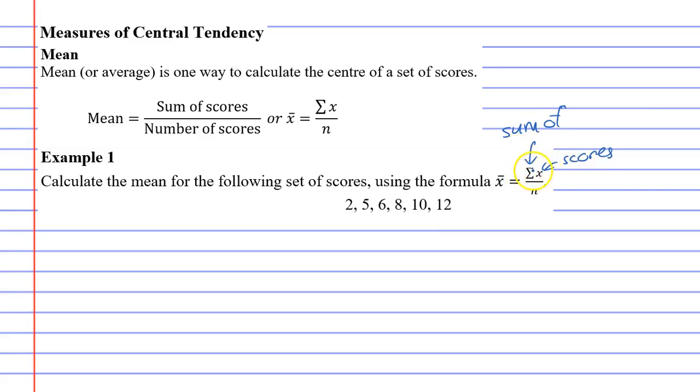So essentially this top line is saying, what is the sum of the scores? And if I was finding sigma x, I would just simply add all these scores up. I would find the sum of them, which is what we do. We add the scores up. So what do I get when I add these up? I'm just going to double check. 12 plus 10 plus 8 plus 6 plus 5 plus 2 comes out to 43. So sigma x is 43.